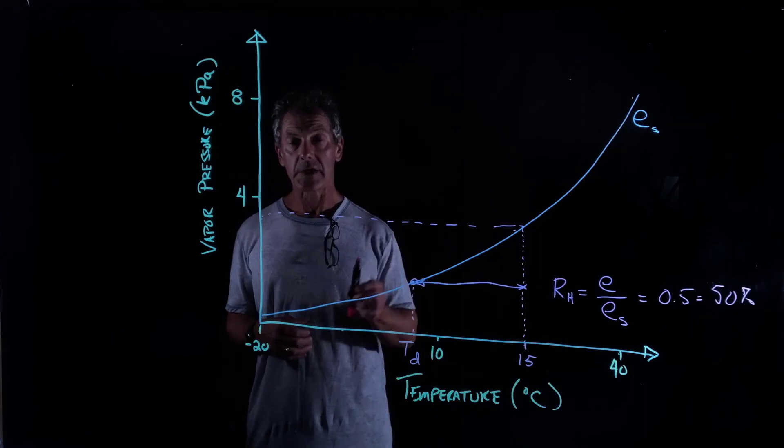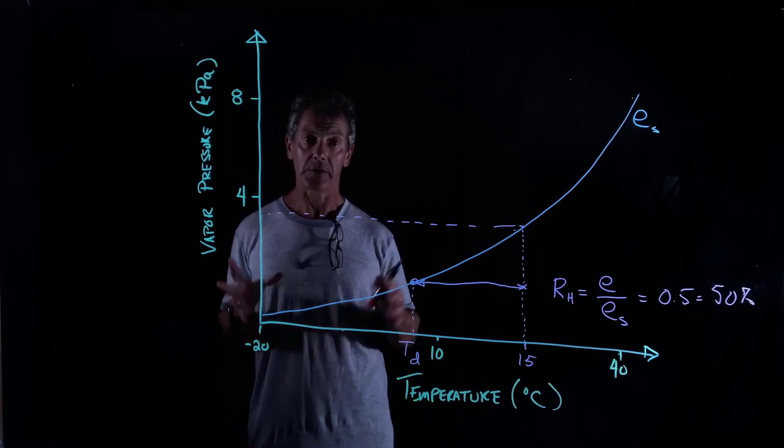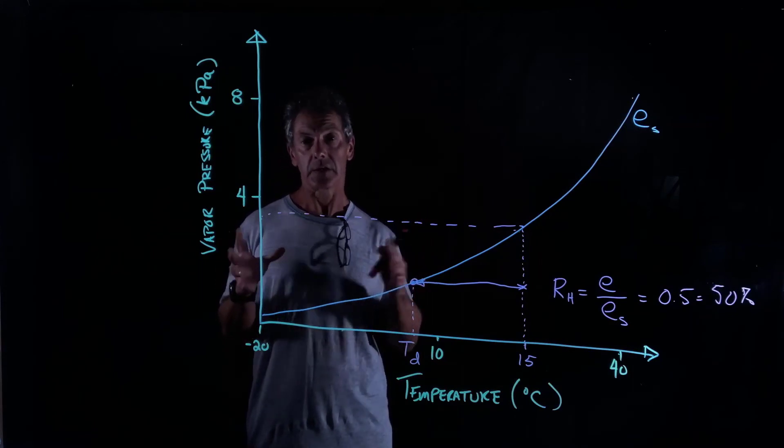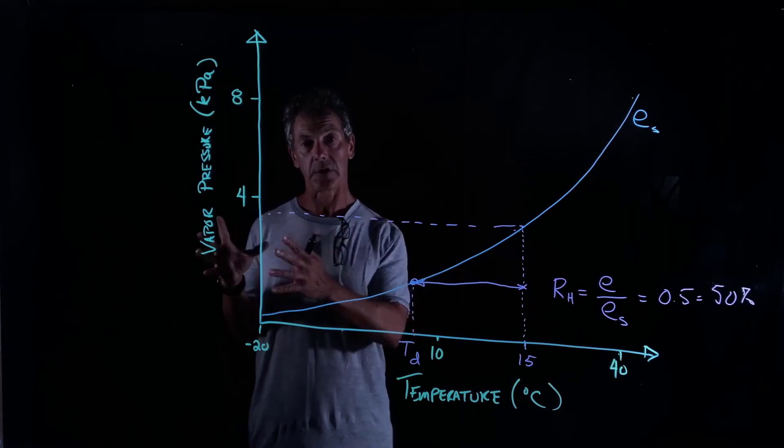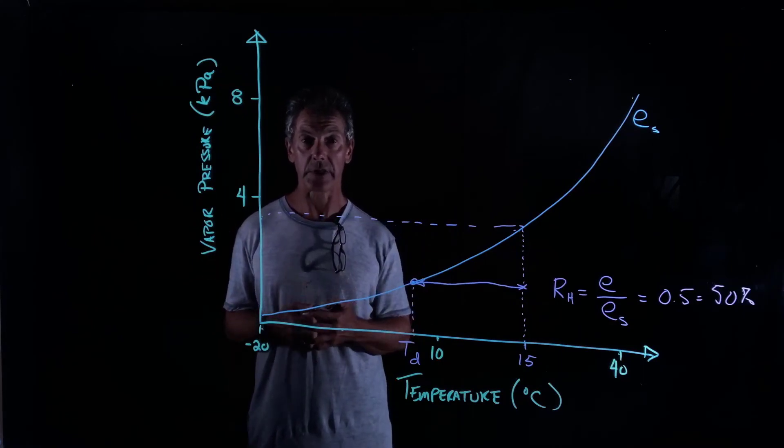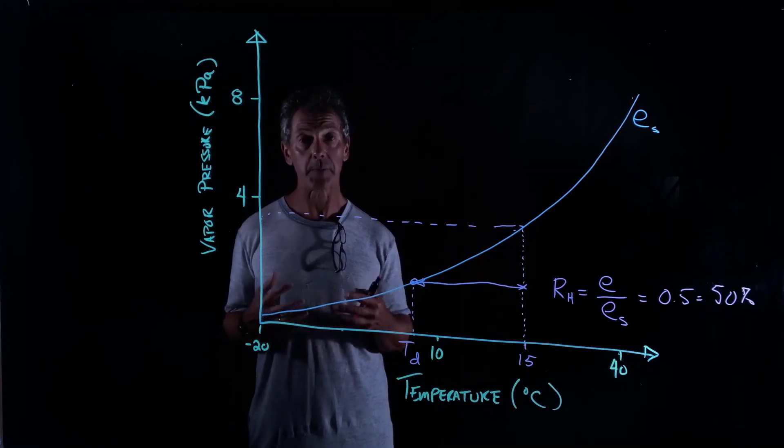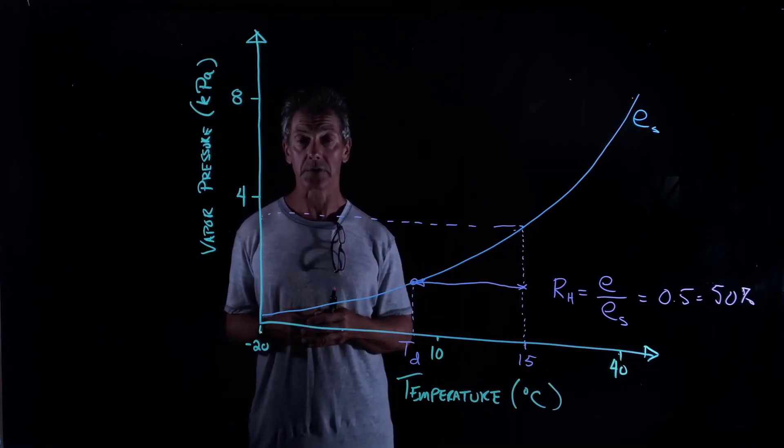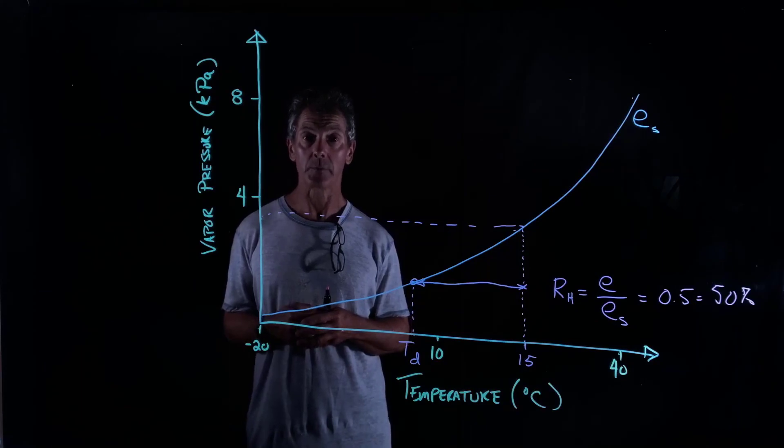So today's homework is about understanding how temperature and vapor pressure are interrelated, and how that controls how much water we can hold in the atmosphere. And then that, in turn, tells us about when we might form precipitation.